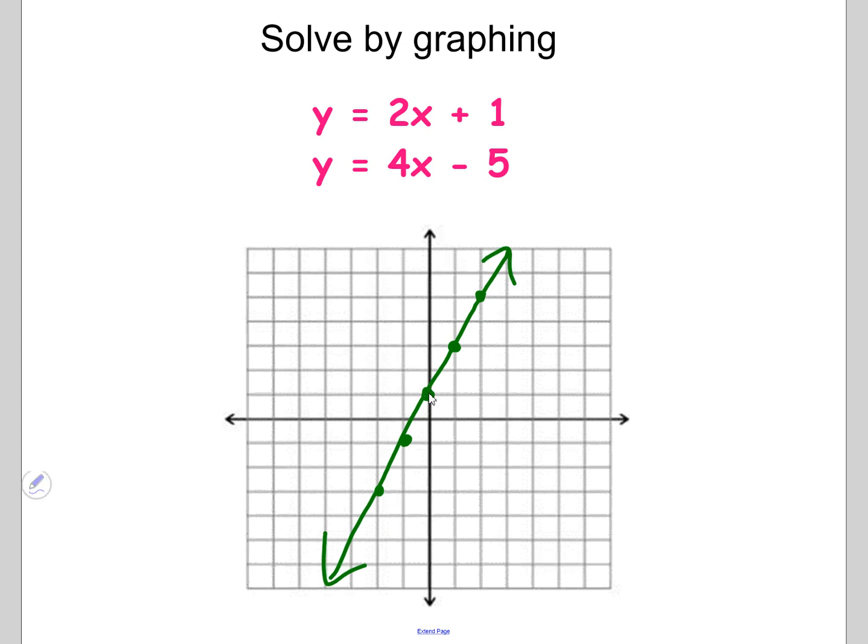Then let's go to the second one, 4x minus 5. I start at negative 5, and then I go up 4 over 1, up 4 over 1, up 4 over 1. It meets way at the top there. I almost didn't know where it was going to intersect.